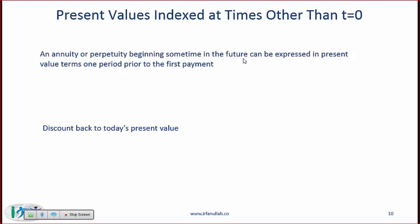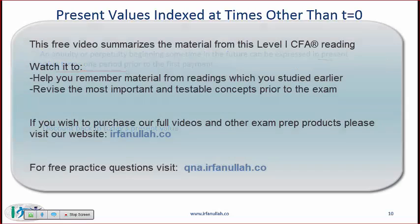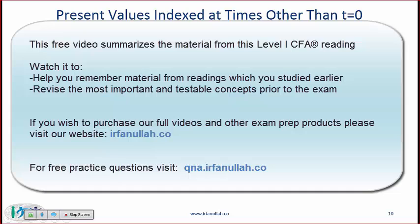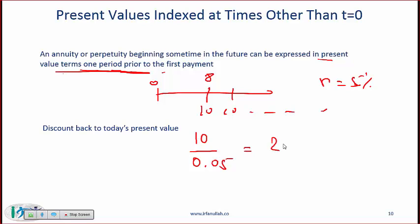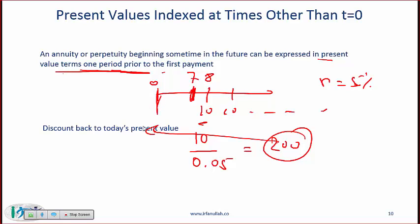An annuity or perpetuity beginning somewhere in the future can be expressed in present value terms one period prior to the first payment — this is critical. For example, if at time zero you have a perpetuity starting at time 8 paying $10 forever at a 5% discount rate, the PV equals 10 / 0.05 = $200, and that $200 is located at period 7 — one period before the first cash flow. Then discount that $200 back to time zero to find the value today.